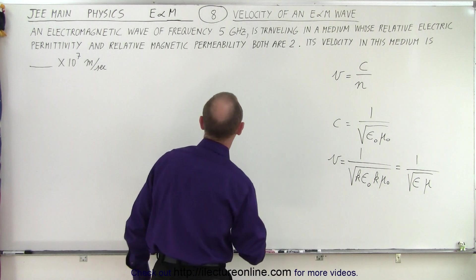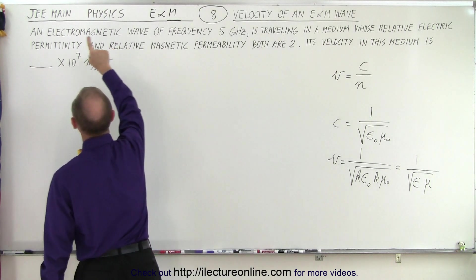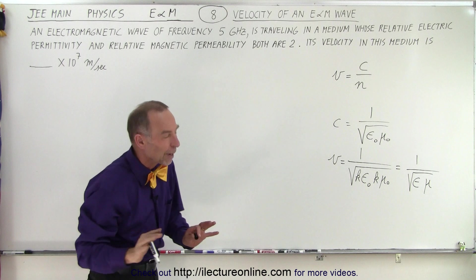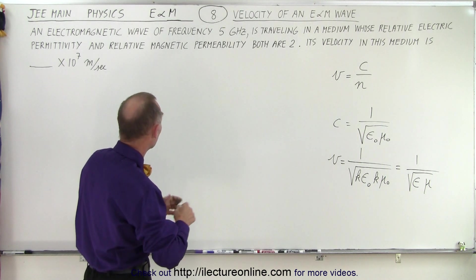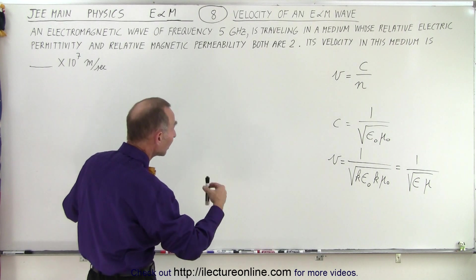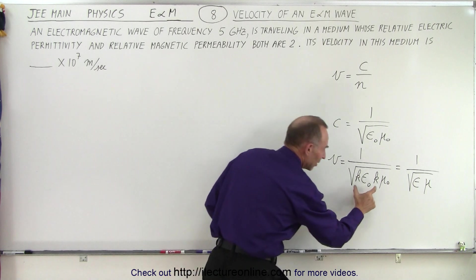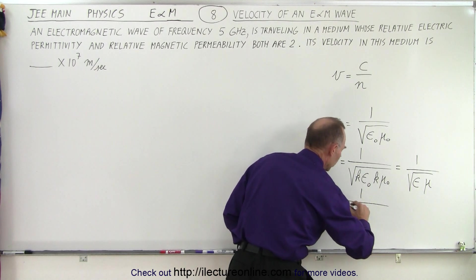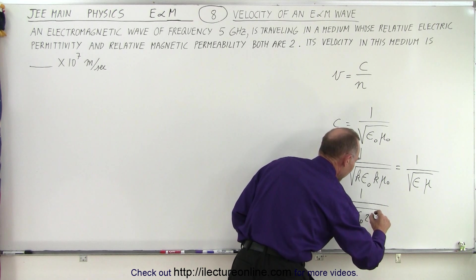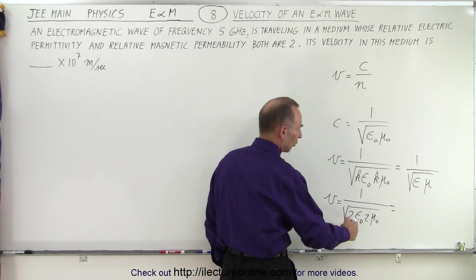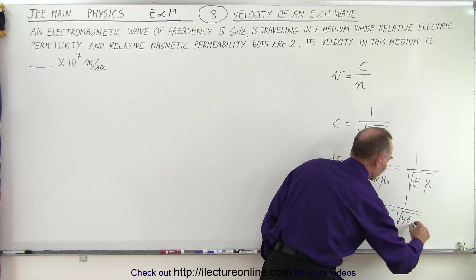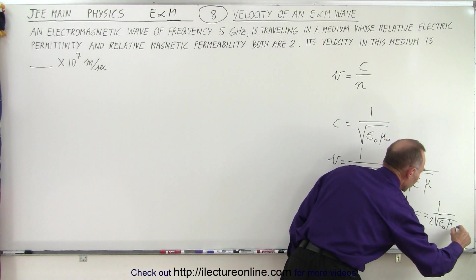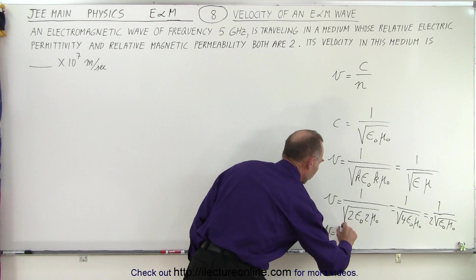In this case they tell us that the relative electric permittivity and relative magnetic permeability are both equal to 2, so these constants are going to be 2. That means the velocity equals 1 over the square root of 2ε₀ times 2μ₀, which equals 1 over the square root of 4ε₀μ₀, which equals 1 over 2 times the square root of ε₀μ₀. Therefore, the velocity is equal to c divided by 2.